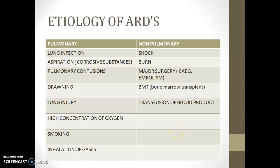There are two types of etiology: pulmonary and non-pulmonary. Pulmonary etiological factors include lung infection, aspiration, pulmonary contusion, drowning, lung injury, high concentration of oxygen, smoking, and inhalation of gases. Non-pulmonary causes include shock, burns, major surgeries such as CABG, embolism, bone marrow transplantation, and transfusion of blood products.